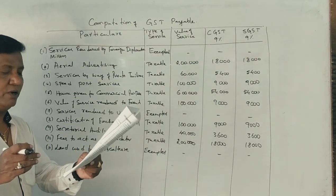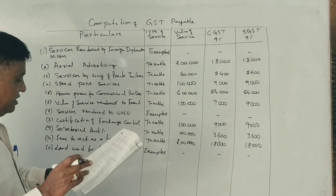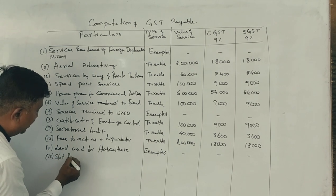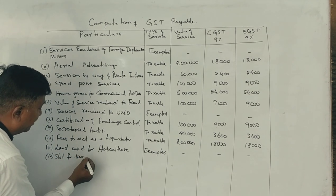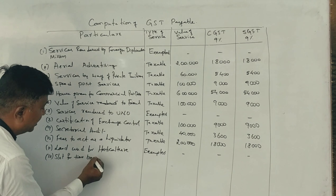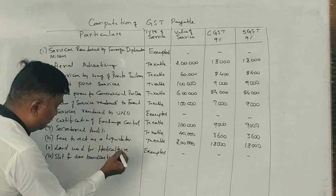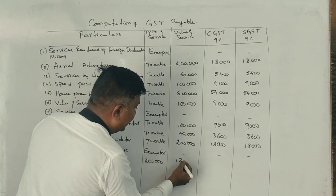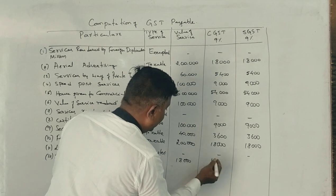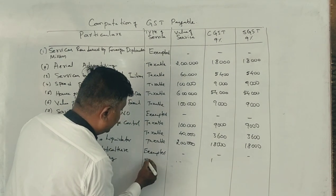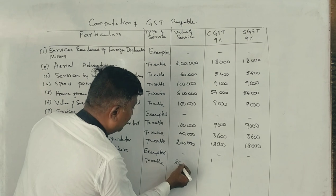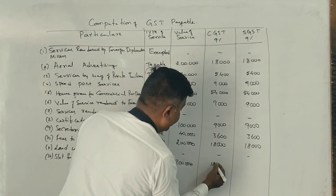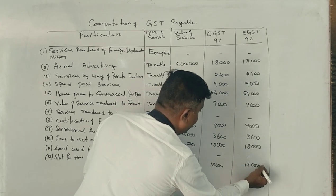Sale of time slot by a broadcasting organization — fully taxable. On 2 lakh rupees, 9% is 18,000 CGST and 18,000 SGST. Taxable service: 2 lakh rupees, 18,000 and 18,000. Clear?